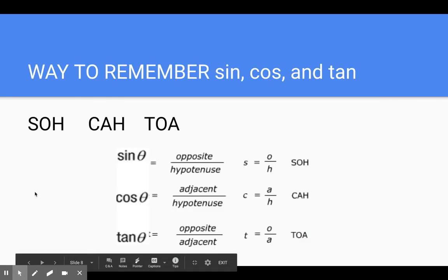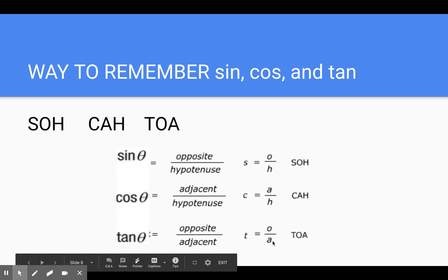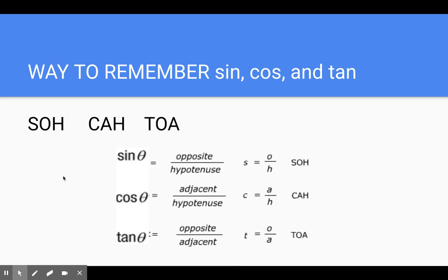A way to remember sine, cosine, and tangent — I've known this since I took geometry: SOH-CAH-TOA. SOH refers to sine equals opposite over hypotenuse. CAH is cosine equals adjacent over hypotenuse. And TOA is tangent equals opposite over adjacent. SOH-CAH-TOA is an easy way for you to remember sine, cosine, and tangent and which side lengths are in which ratio.